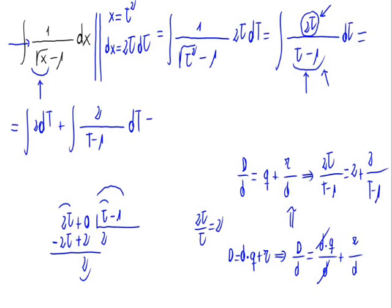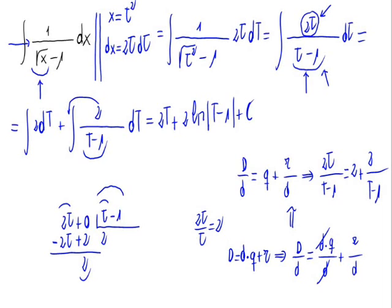The first integral is straightforward: the integral of 2 is just 2t. For the integral of 2 divided by (t minus 1), we factor out the 2, giving 2 times the natural logarithm of (t minus 1), plus a constant.